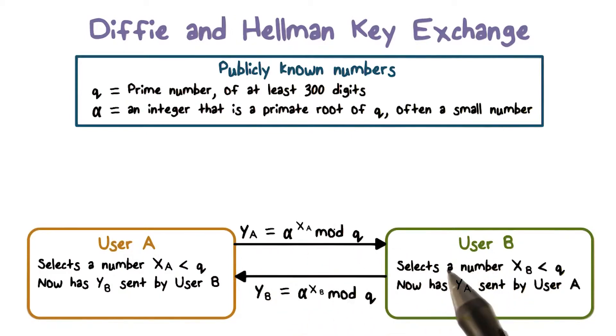Because the y value is transmitted, it is public. User A upon receiving yb would compute a key as yb raised to the power of xa mod q. This is actually the same as alpha raised to the power of xb times xa then mod q.